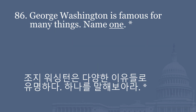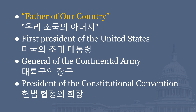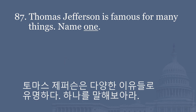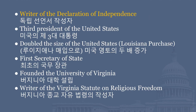George Washington is famous for many things. Name one. Father of our country. First President of the United States. General of the Continental Army. President of the Constitutional Convention. Thomas Jefferson is famous for many things. Name one. Writer of the Declaration of Independence. Third President of the United States. Doubled the size of the United States — Louisiana Purchase.